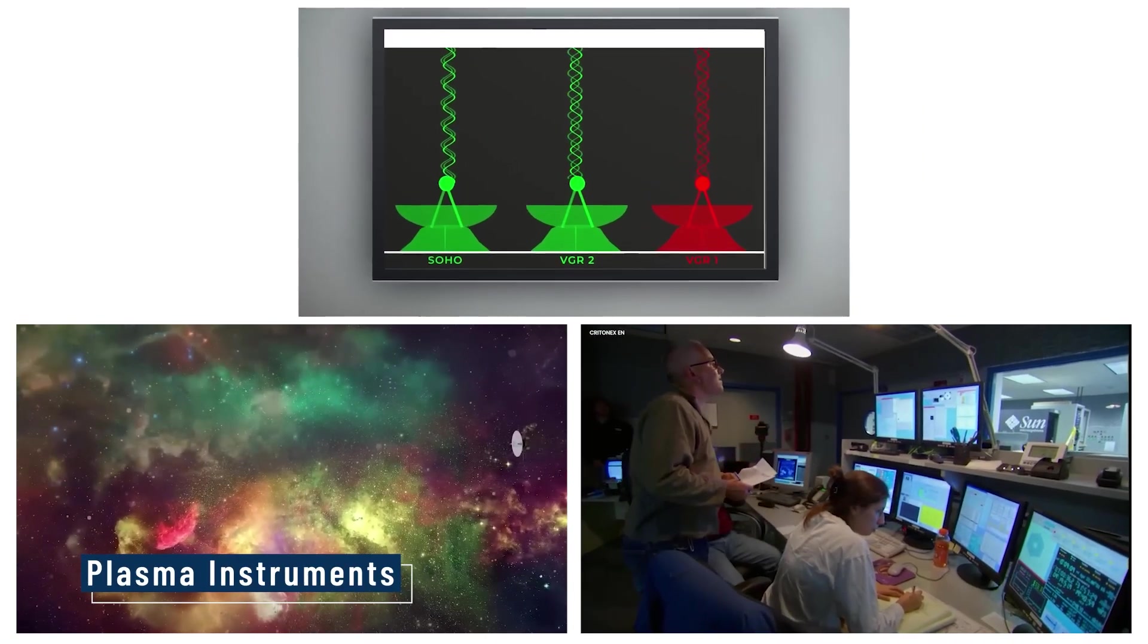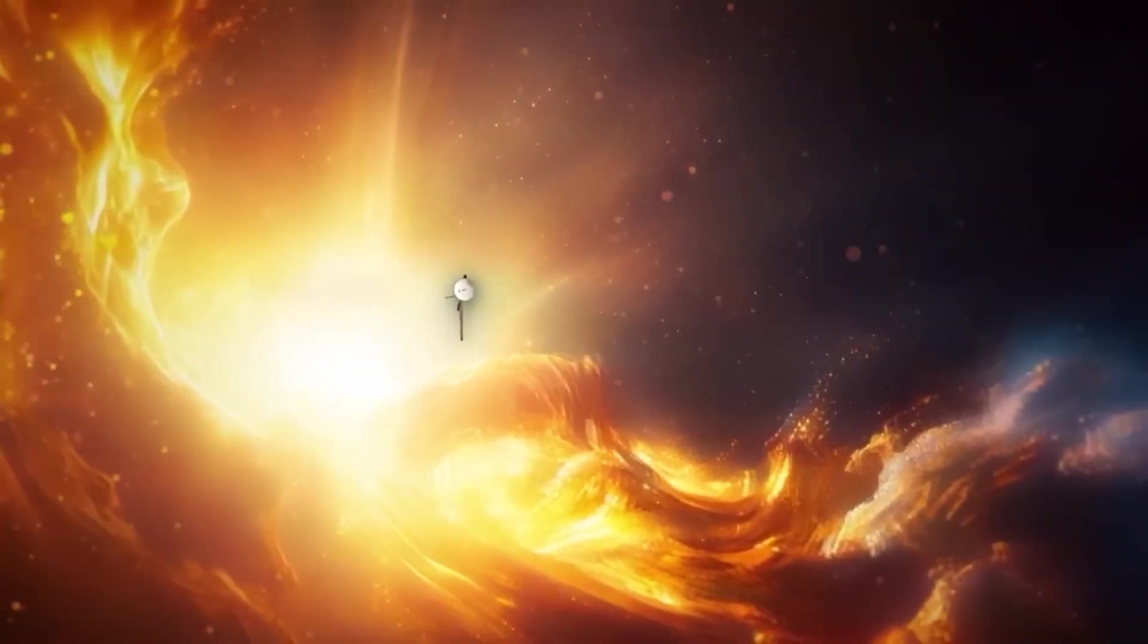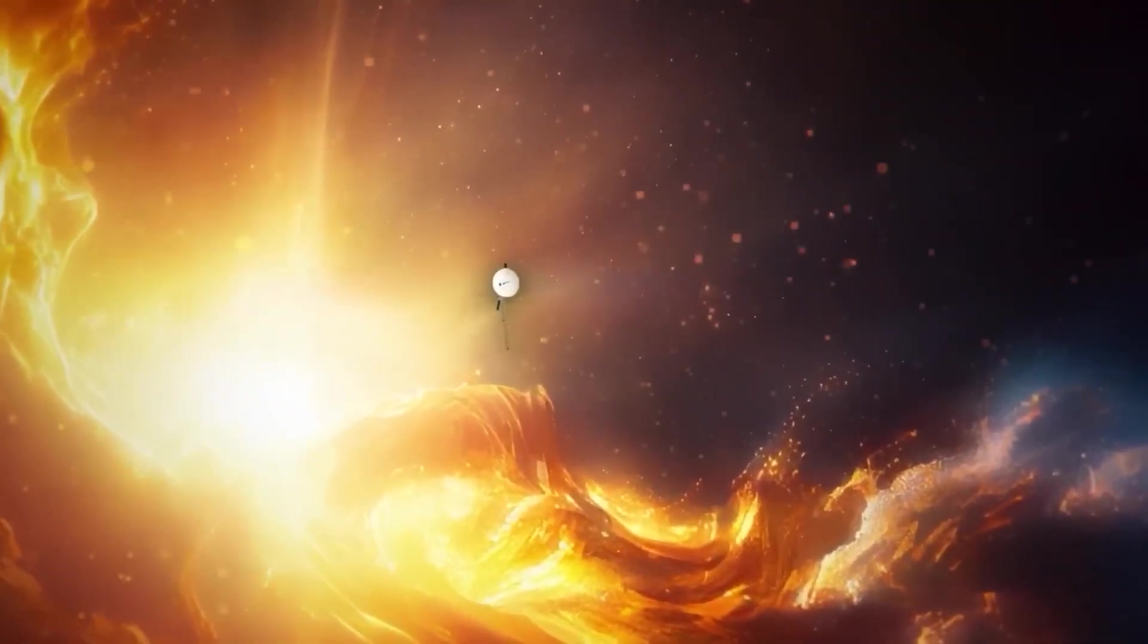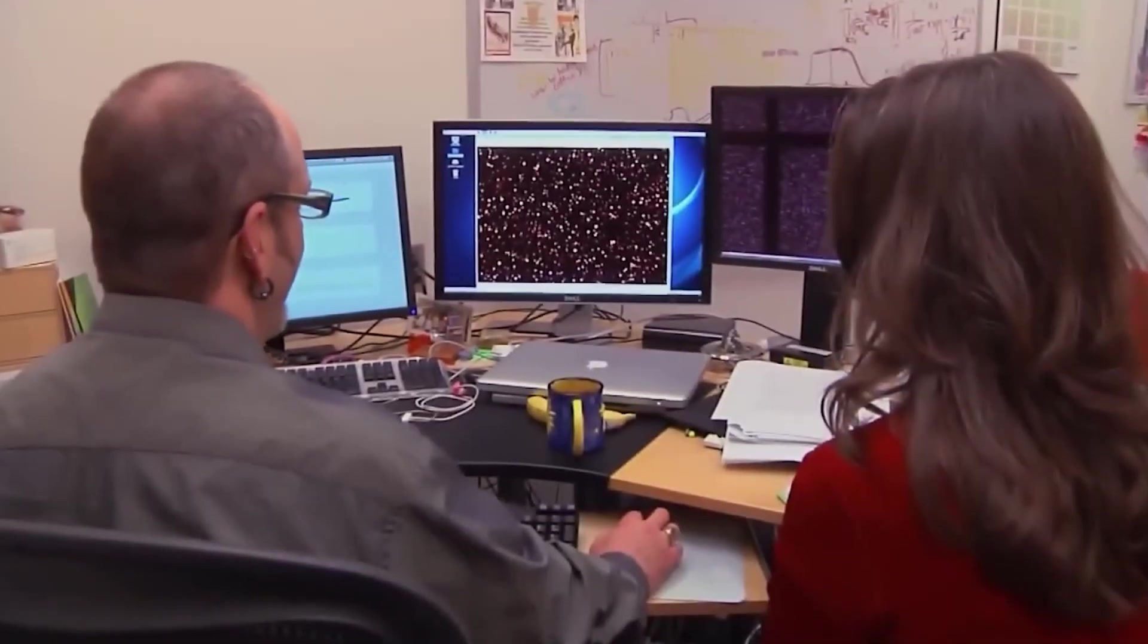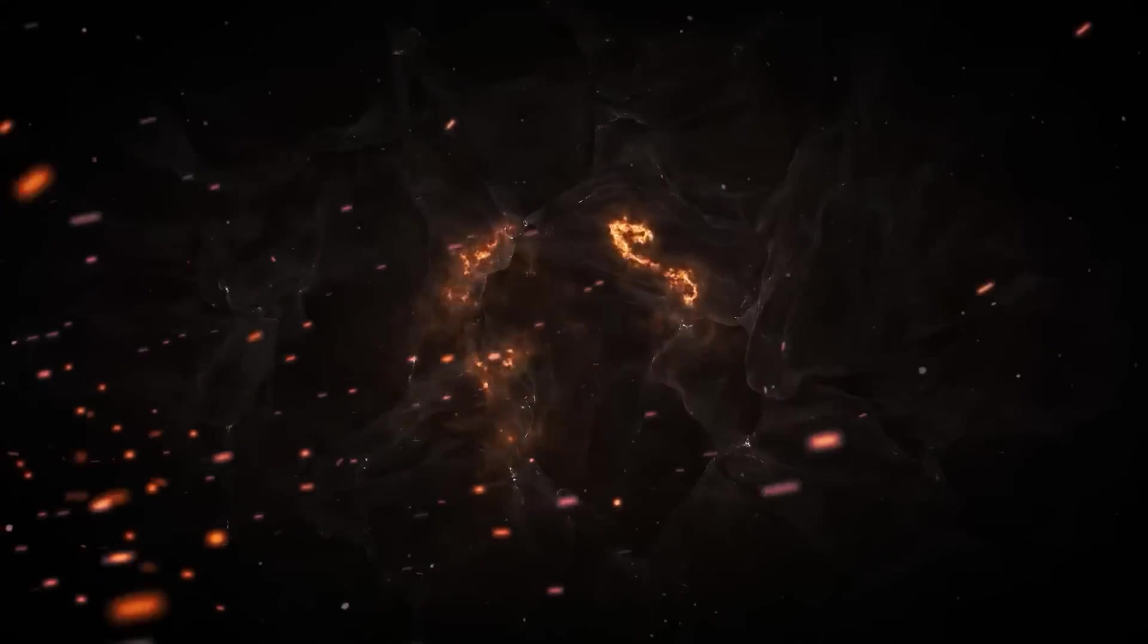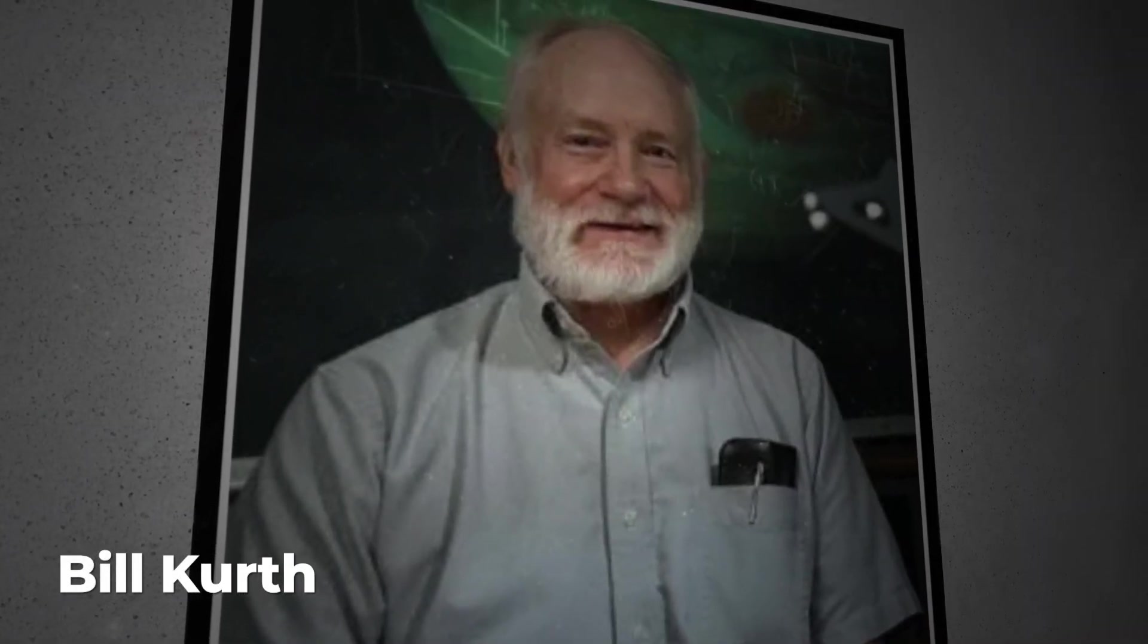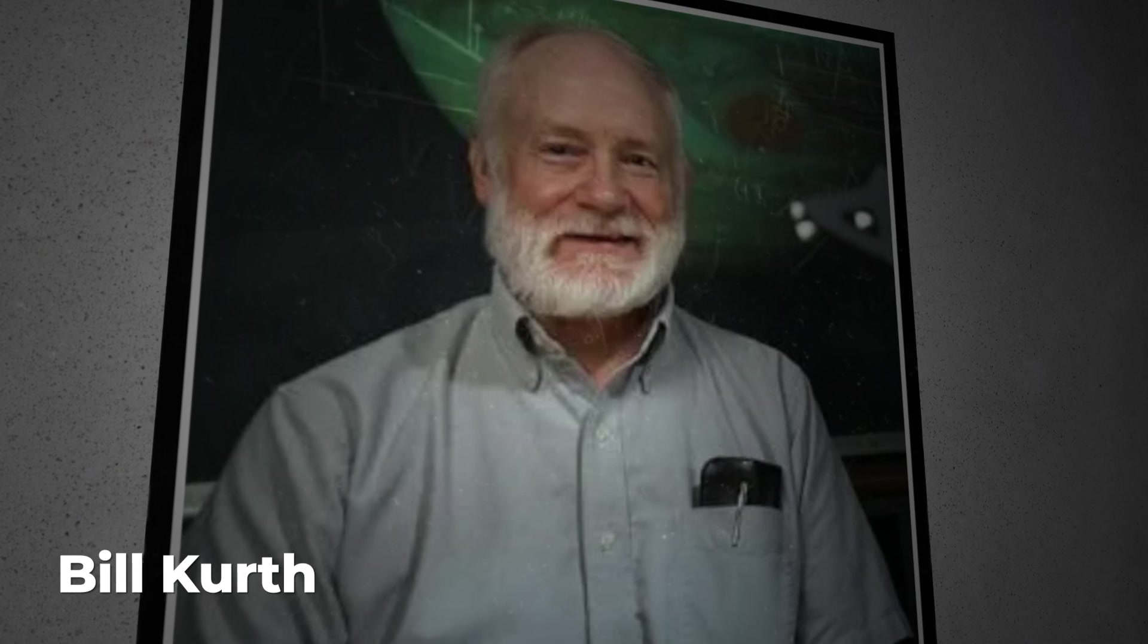Plasma instruments picked up a faint, consistent signal, a low hum. At first, scientists thought it might be a glitch. But it wasn't. It was real. The plasma in interstellar space is not still. It hums. It vibrates. We expected silence. Instead, we got a whisper, said Bill Kurth, one of the lead scientists. The void, it turns out, is very much alive.